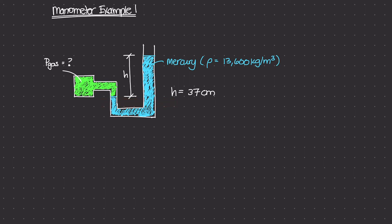We're really interested in this point here where the gas meets the liquid. So if I were to draw a horizontal line through that point, I can try to figure out what the pressure is on that point, and that will be the pressure on the left side, which is equal to the pressure of the gas. We can use our hydrostatic pressure equation: p = p₀ + ρgd.